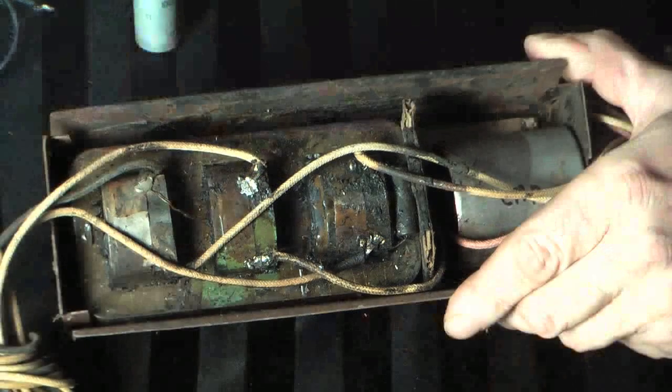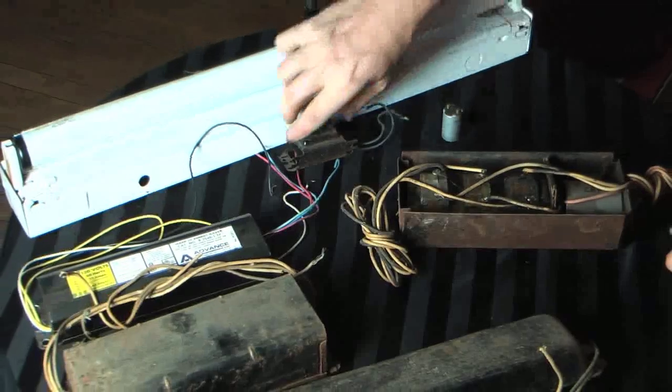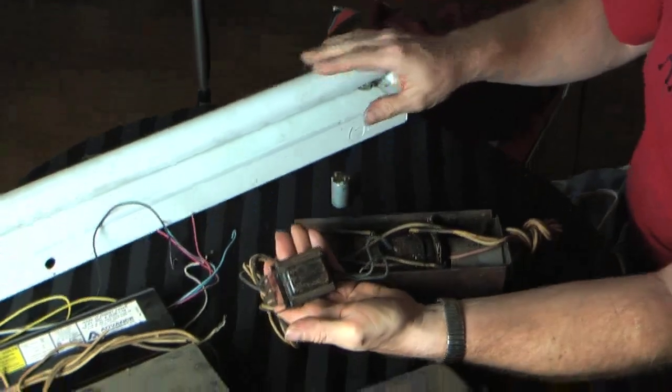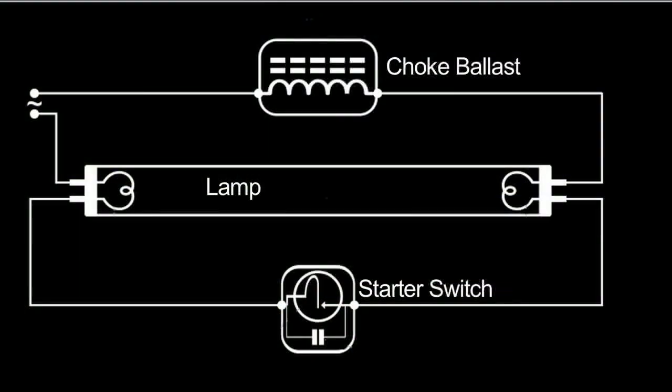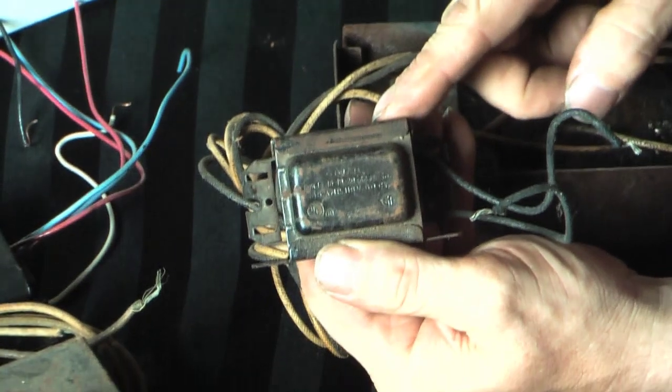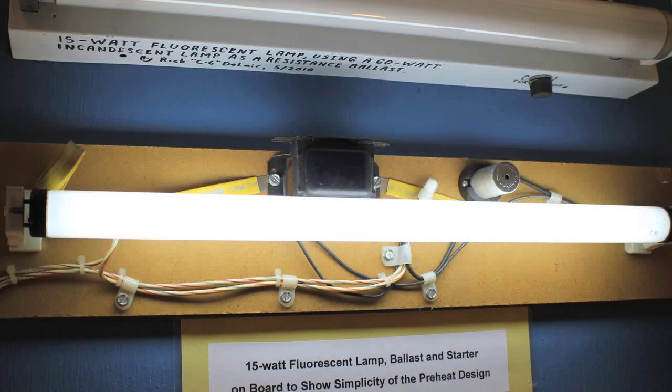So basically a ballast is a type of transformer combined with a current limiter. On the smaller fluorescents like this one, you have a simpler ballast. And this is it. This is what runs this lamp. It's a simple choke ballast, just like what's in the big ballast, except it doesn't need a step up transformer and it doesn't use a capacitor. So all it has is just a choke in series with the lamp. And this does everything. It limits the current to the lamp so it can't get too much current, it provides the inductive kick to start the lamp, and it limits the current through the cathodes during preheat. So this ballast does three things all in one little unit. And it's just a simple little coil with two wires in series with the lamp.